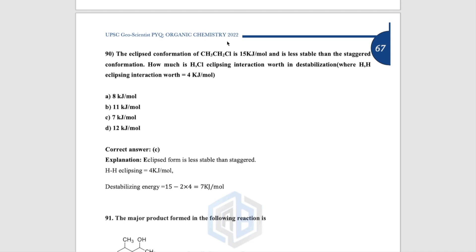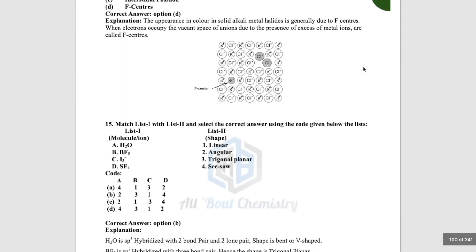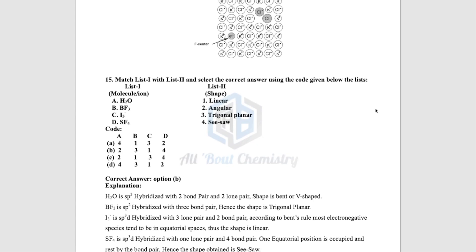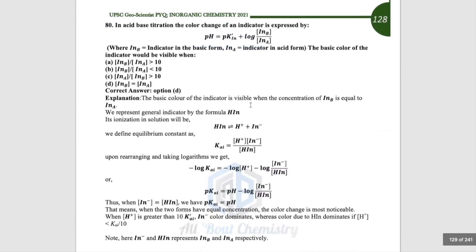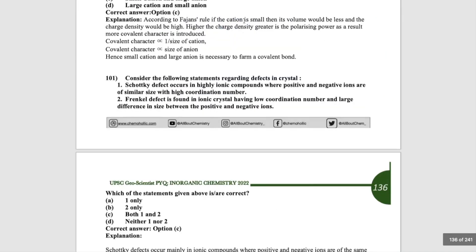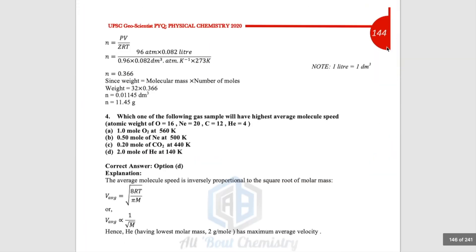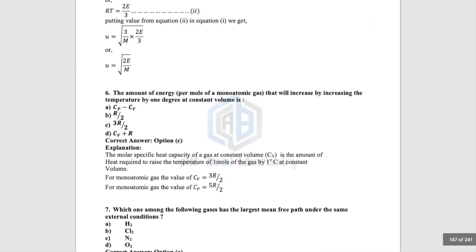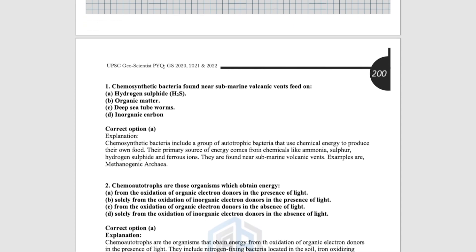We have also given color codes to each section. Organic chemistry pages and headers are in blue. Inorganic chemistry is coded in green — so if you want to know which year a question is from, the header will say 'UPSC Geoscientist PYQ — Inorganic Chemistry — 2020 or 2021 exam.' Physical chemistry is coded in red. The GS part is given a black color code. We've excluded current affairs from GS and combined questions from 2020, 2021, and 2022 together.